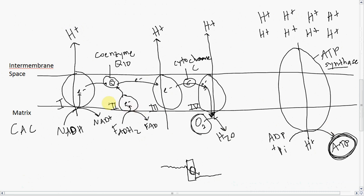To recap: the products of the citric acid cycle in the matrix, NADH and FADH2, transfer their electrons to complexes 1 and 2 respectively. Both transfer their electrons to coenzyme Q10, which transfers them to complex 3, ultimately to complex 4, and eventually to oxygen to make water.